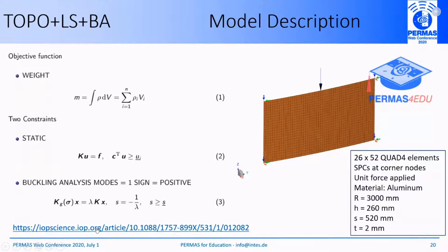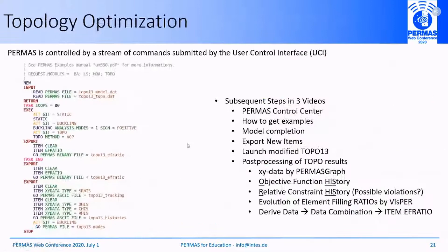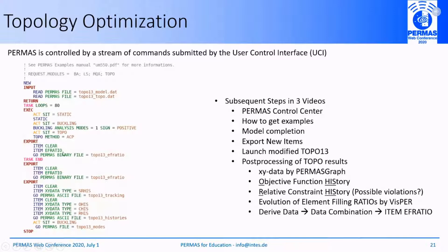On the left-hand side you will see the UCI file. For those new to PERMAS: PERMAS is controlled by a stream of commands submitted via the User Controller Interface (UCI). All optimization problems are solved iteratively, so we use a number of loops. Inside the loop, the different analyzer types connected to the optimization are included — static analyzer and buckling analyzer. We perform topology optimization using the SIMP method. This is the export section for the filling ratio. At the end, additional information regarding the history — the evolution of the objective function, the constraint history, and the relative constraint history — can be exported to PERMAS graph or to a spreadsheet.